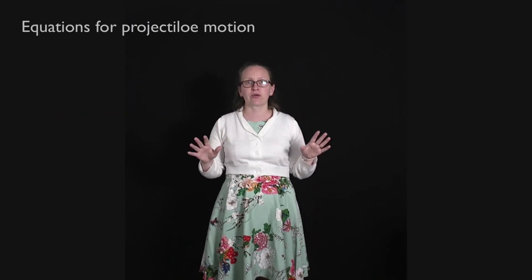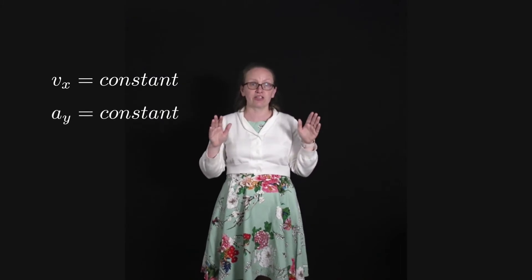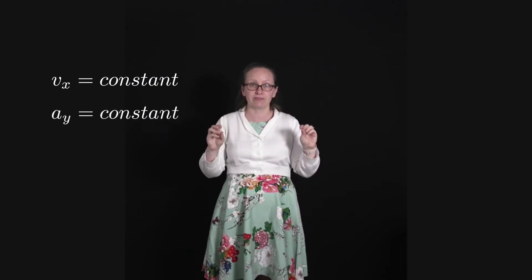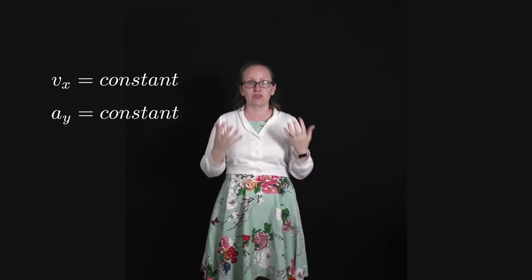We've now seen a case of projectile motion. When I threw the ball to Bryony, the ball was undergoing projectile motion. What we're going to do now is derive some useful equations to describe projectile motion. With projectile motion, it's important to remember that horizontally the projectile is traveling with a constant velocity, and vertically the projectile is undergoing constant acceleration caused by gravity. Using these and the kinematic equations, we're now going to derive some useful equations for describing the path of a projectile.